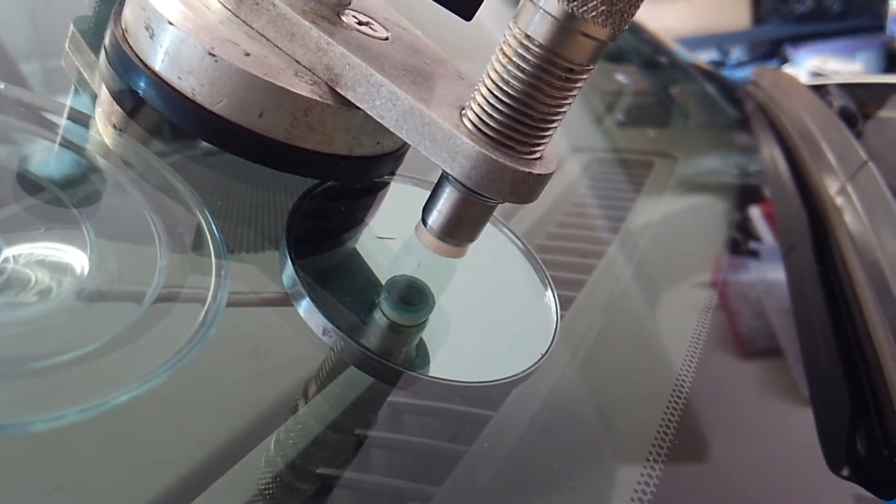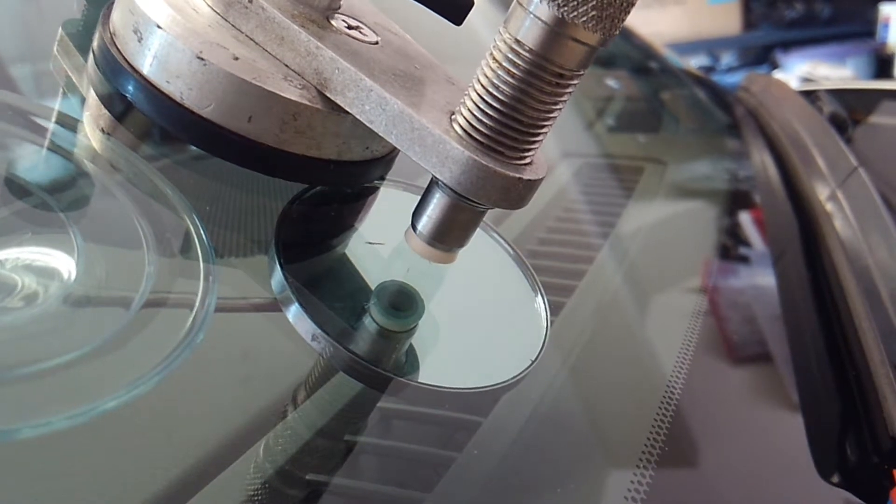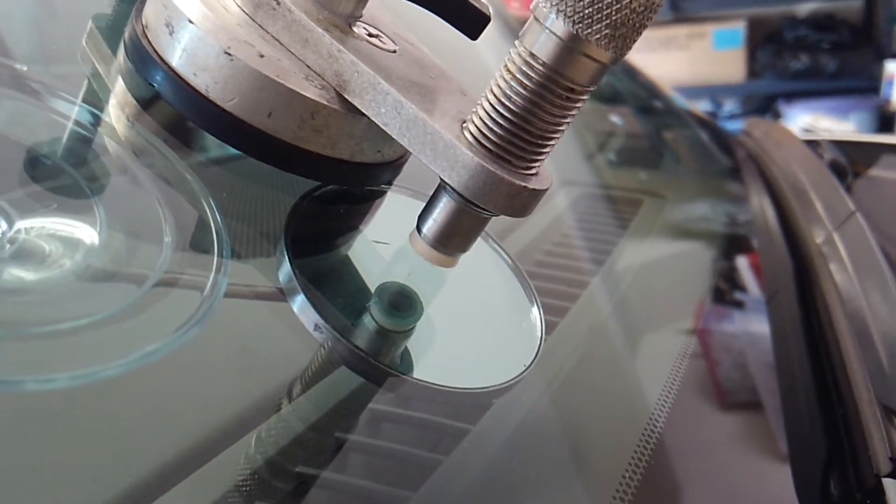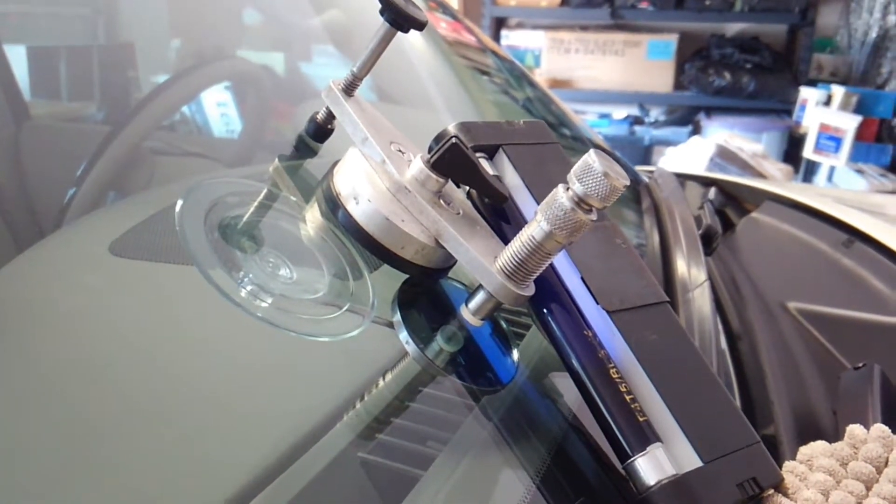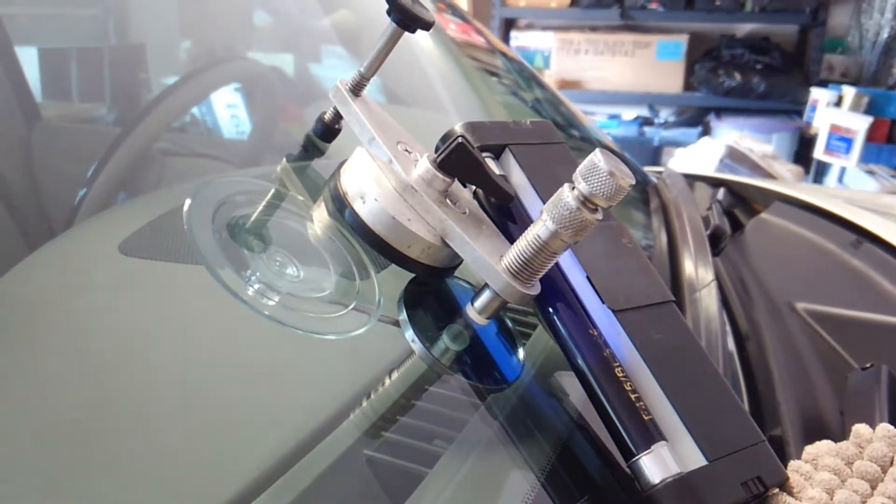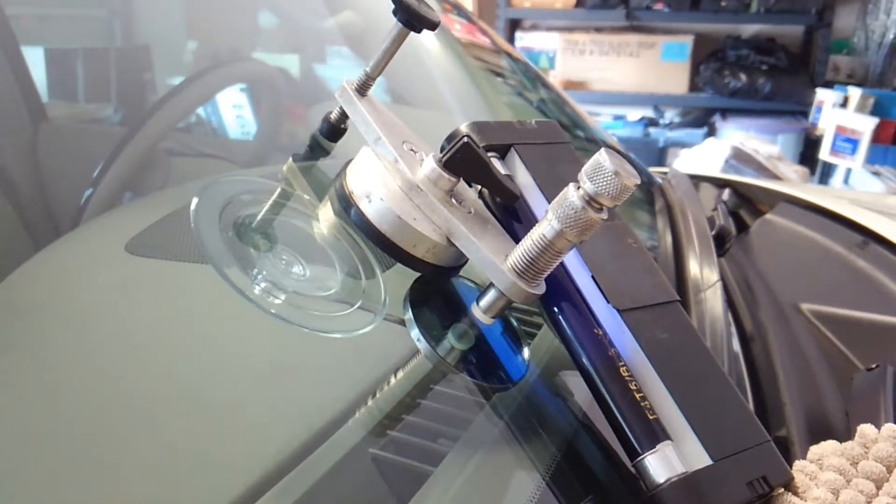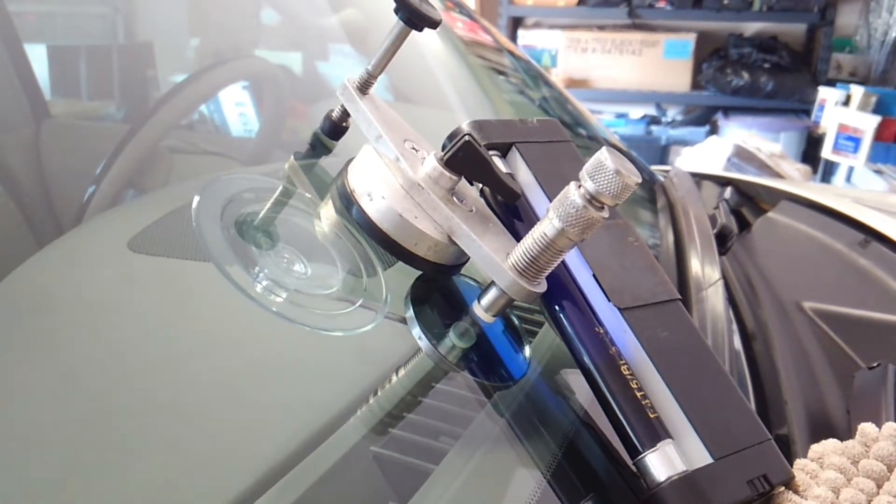Before we apply UV light, that's going to cause the liquid to harden. You can see we have the ultraviolet light on it now. We'll give that three or four minutes to allow the resin to cure, then we'll remove the light and bridge and clean up the surface of the glass.